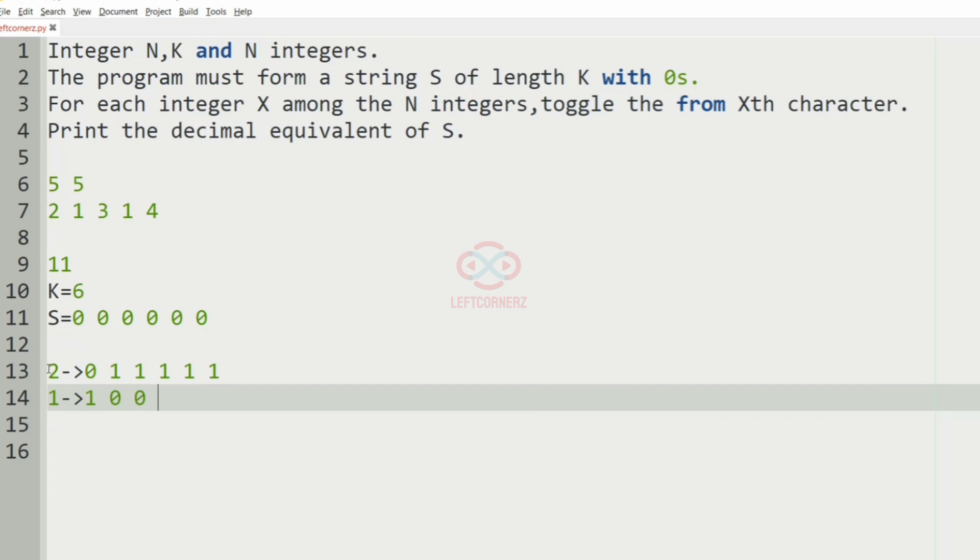So 1 0 0 0 0 and after this we have 3. So we'll toggle from the third position.